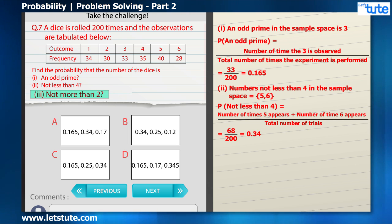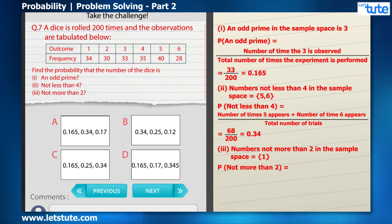And the last part of the question asks for a number not more than two in the sample space. Now here it says not more than, which means we have to look out for the numbers which are less than or equal to two. In the sample space, the number which is less than or equal to two is just number 1. So the probability of not more than two will be equal to the number of times 1 has appeared, which is 34 divided by 200, which comes to 0.17.